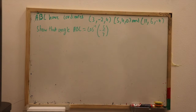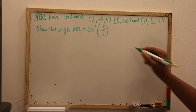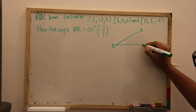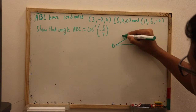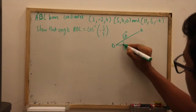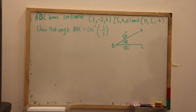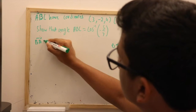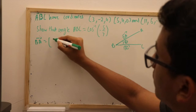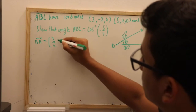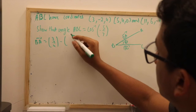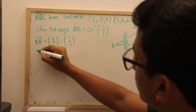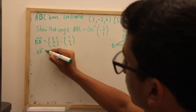The following question asks us to prove that angle ABC equals inverse cosine of negative 5 over 7. In order to do this, we draw the two lines out and place the values of A, B, and C. We use the scalar product formula, finding vectors BA and BC. To find BA, we subtract coordinates A with coordinates of B, where A is (3, -2, 4) and B is (5, 4, 0), giving us (-2, -6, -4).